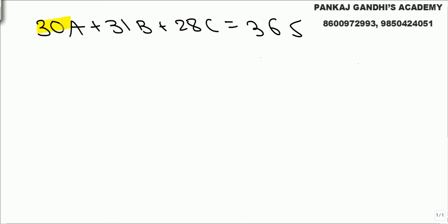A very popular mathematical equation: A=38, B=31, C=28, and 365. Obviously with one equation and three variables we cannot solve it directly, but it's more about reasoning and attention to detail. 365 days in a year.